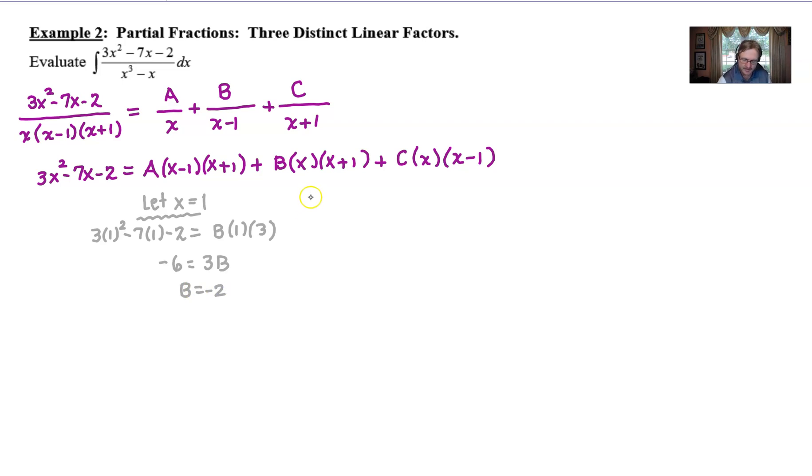Now just think about choosing another value for x. Maybe you choose x equal negative 1. Again, it doesn't matter what order. We're going to plug negative 1 in for all of the x's that we see. Here's the left side. And we'll do the same thing with the right side. Hopefully you notice the A term will disappear. The B term is going to disappear. We're still going to have C multiplied by negative 1 times, I believe, negative 2, since negative 1 minus 1 is negative 2.